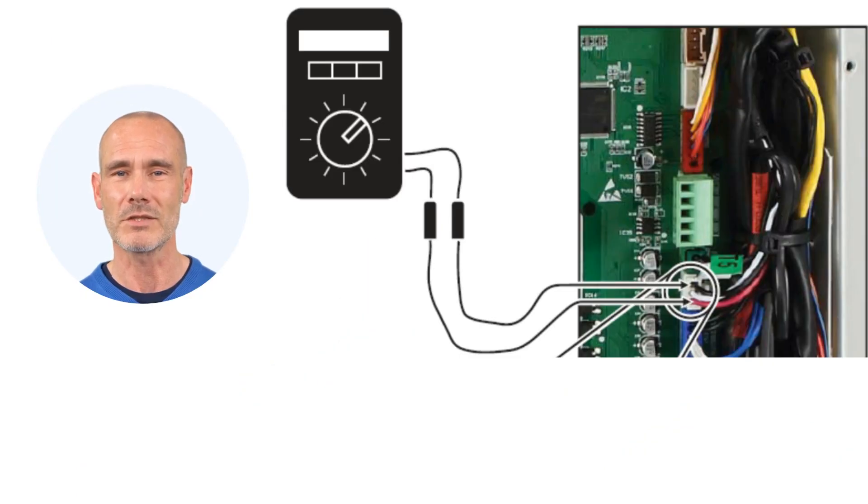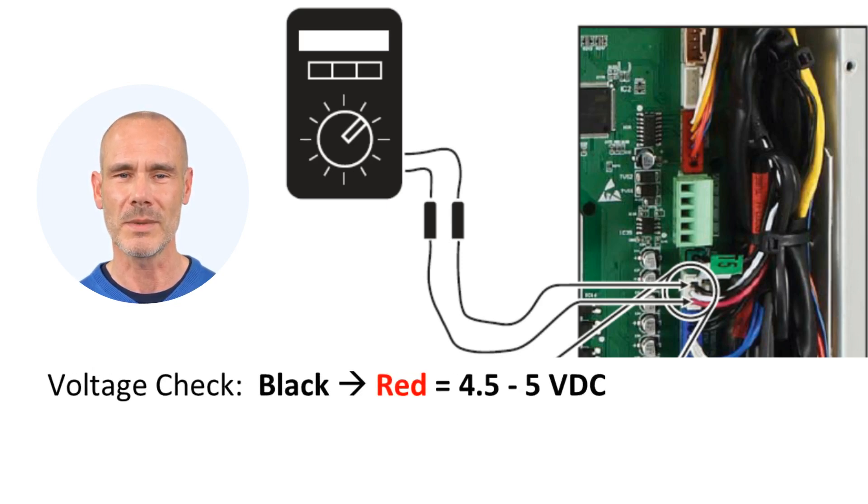To test using your needle points, first measure across the red and black wires in DC voltage. Make sure you have between 4.5 and 5 volts DC. If the value does not fall between 4.5 and 5 volts DC, then your control board is faulty.